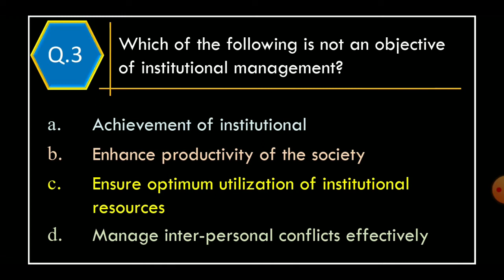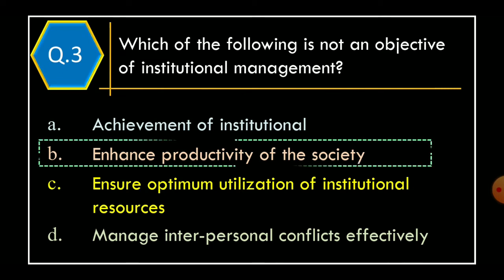Question 3. Which of the following is not an objective of institutional management? Option A: Achievement of institutional goals. Option B: Enhance productivity of the society. Option C: Ensure optimum utilization of institutional resources. Option D: Manage interpersonal conflicts effectively. The correct option is Option B: Enhance productivity of the society.